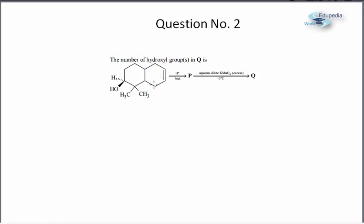First we have an alcoholic group OH which we are giving H plus heat. This is a standard case for dehydration of alcohol. This OH will get protonated and convert into a good leaving group, so it will leave from here.